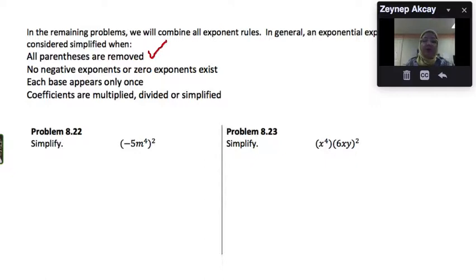No negative exponents or zero exponents exist. Also we shouldn't have exponent 1. We simply don't need it.